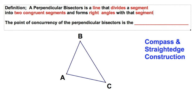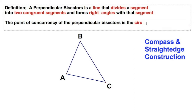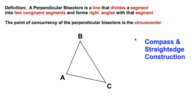Now, the point of concurrency — concurrency means where all things come together. In this case, three lines are going to come together at a single point. That point of concurrency of the perpendicular bisectors is known as the circumcenter. Think about earlier explorers circumnavigating the globe. Let me help you with that — let's make some room and get that definition down.